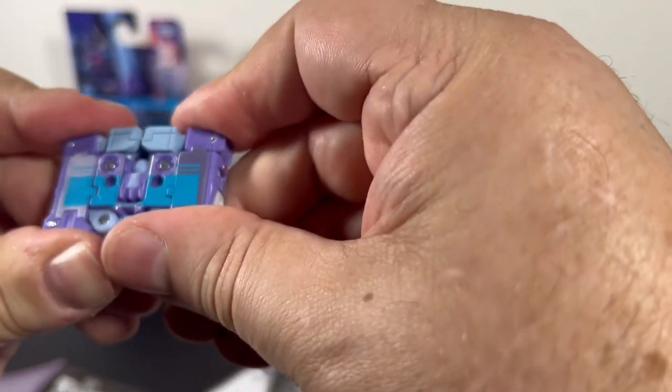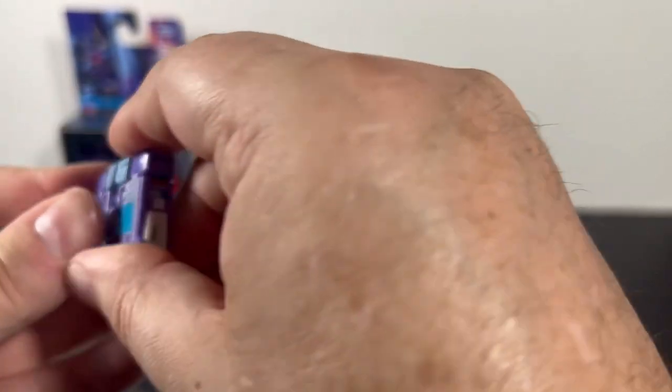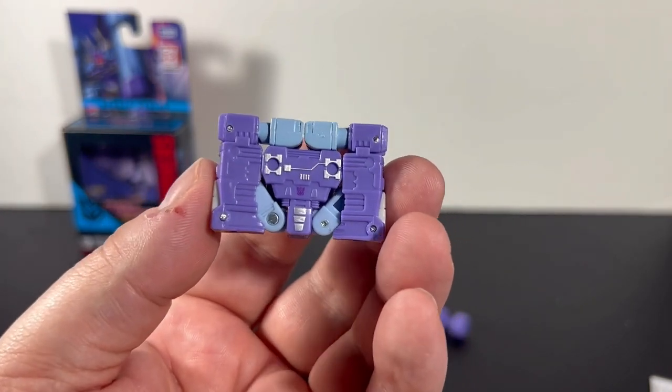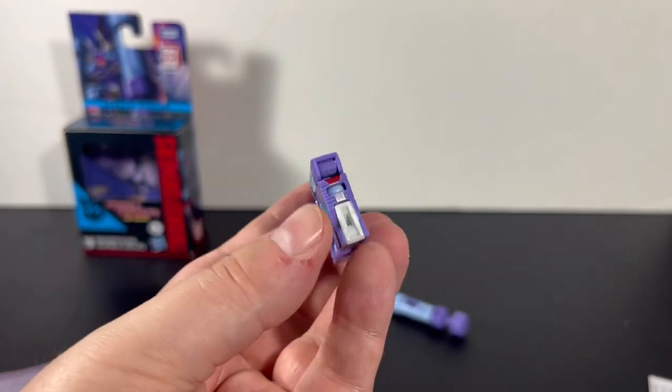Line up the notches. All the notches are lined up and the other side looks like that. So that's him in cassette mode.